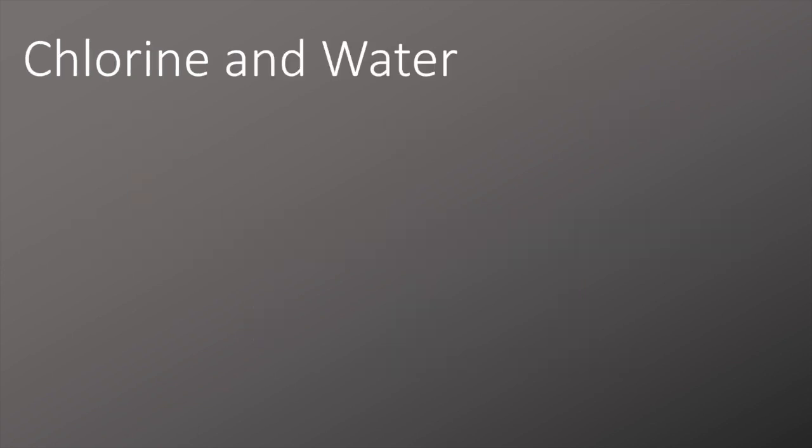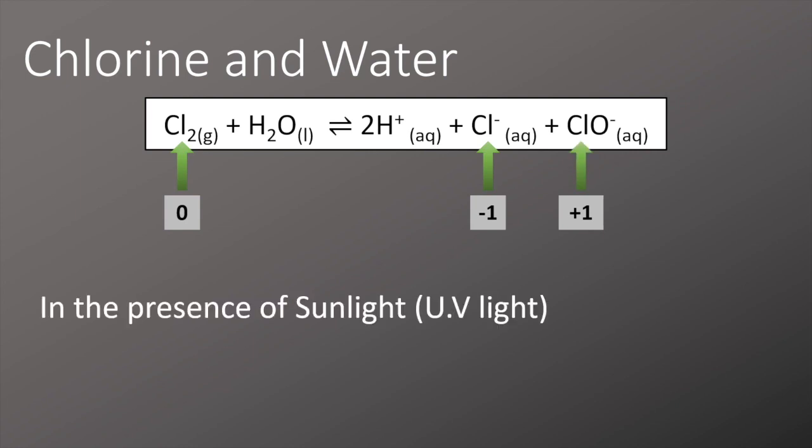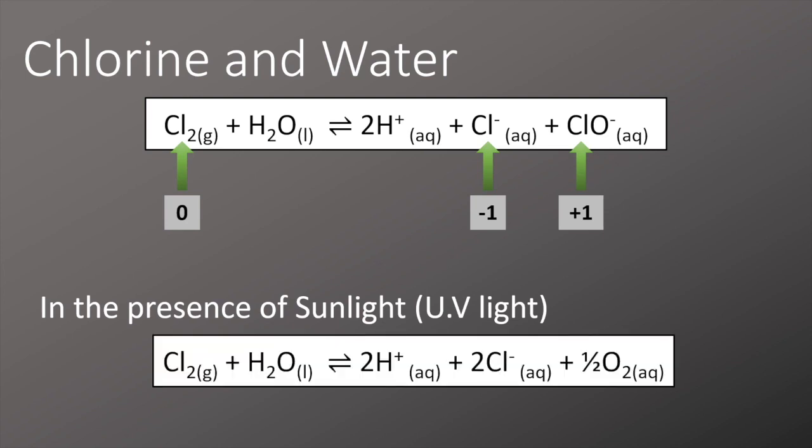Chlorine also reacts with cold water in another example of a disproportionation reaction. Here we have chlorine at oxidation state zero going to form the chloride ion at minus one, where it's been reduced, and in the chlorate ion, where it's now got an oxidation state of plus one. This reaction also takes place in the presence of sunlight, but the products are slightly different. In this case, rather than forming the chlorate ion, we form another chloride ion and more oxygen.